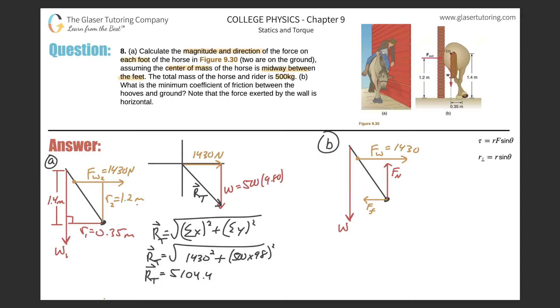If you want to find the force on each foot, how many feet does the horse have here? In the picture, he has two. We know there are actually four, but we're only highlighting two here. We're going to divide this term by two. That will be the resultant force, or the force on each foot: about 2550 newtons on each foot.